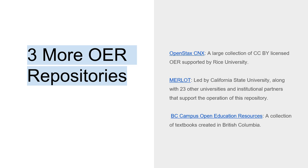Here's a list of three more OER repositories — there are plenty of them, but these are some of the main ones. Another one is OpenStax, a large collection of CC BY licensed OER supported by Rice University. Merlot is led by California State University along with other partners — it's a big one like OER Commons with a diverse collection of resources. And then BC Campus Open Educational Resources: its collection of texts was created in British Columbia but also links out to many other resources. I've found that one to be quite a handy one personally.